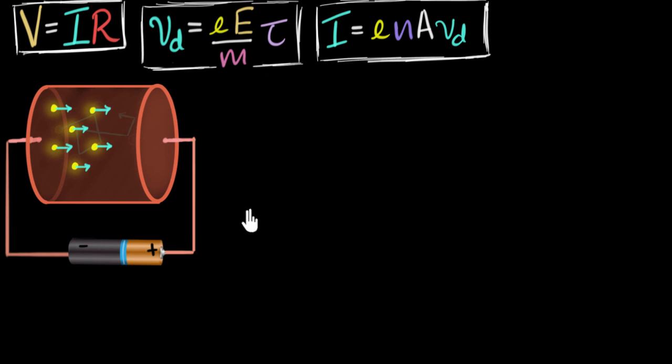Now, with these two, we have to figure out or derive Ohm's law. Where do we start? Since Ohm's law has current and voltage in it and I see current, let's start from here. I know the expression for current and I can substitute the expression for VD over here. If I do that, I'll get I equals E times N times A, where A is the cross-sectional area of this conductor, times VD, and that VD, I'm going to substitute from here. That's going to be E times capital E divided by M into tau, so tau is the relaxation time.